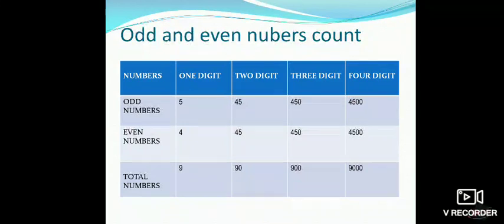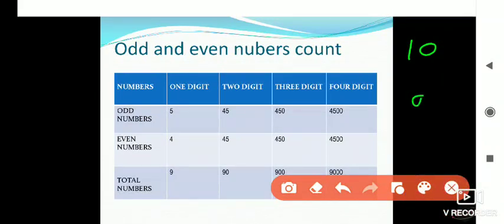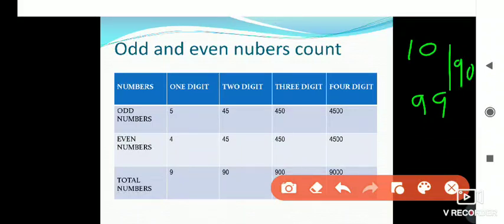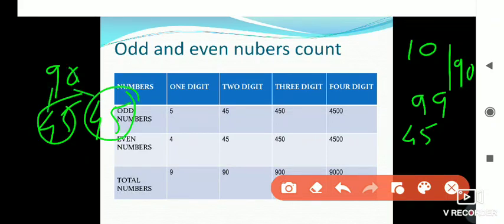Regarding two-digit numbers: the smallest two-digit number is 10 and the greatest is 99. Total numbers present between 10 and 99 are 90 numbers. Out of these 90 numbers, 45 are odd and 45 are even numbers. Keep this in mind.